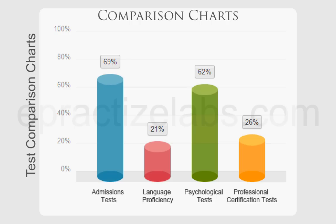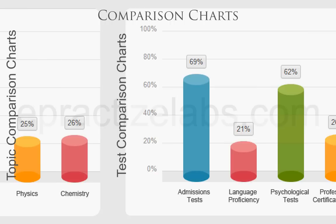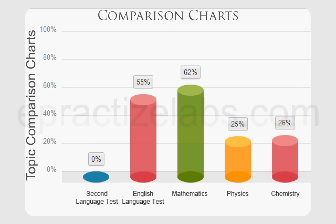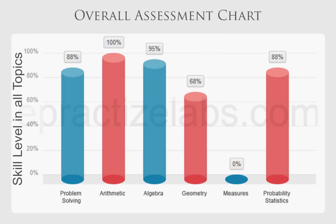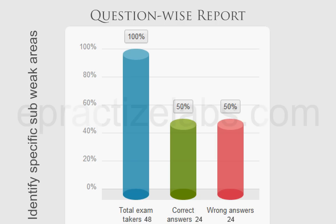An Opportunity for Improvement: Test Comparison Charts and Topic Comparison Charts to measure overall weakness and measure your faculty level. Candidates' overall assessment chart measures skill level in all assigned topics. Question-wise report for surveys, or to identify specific sub-areas where candidates are weak.